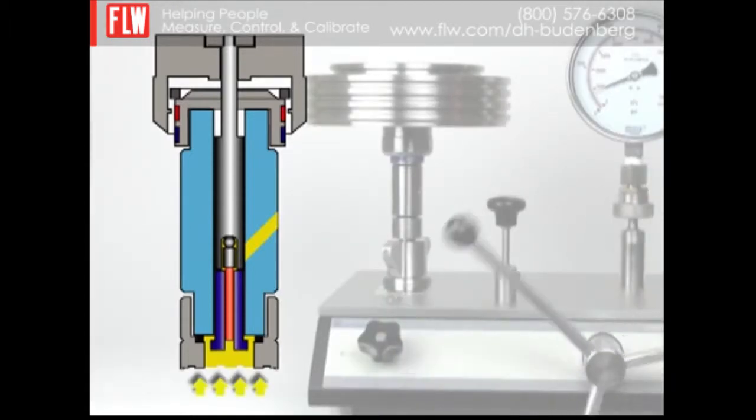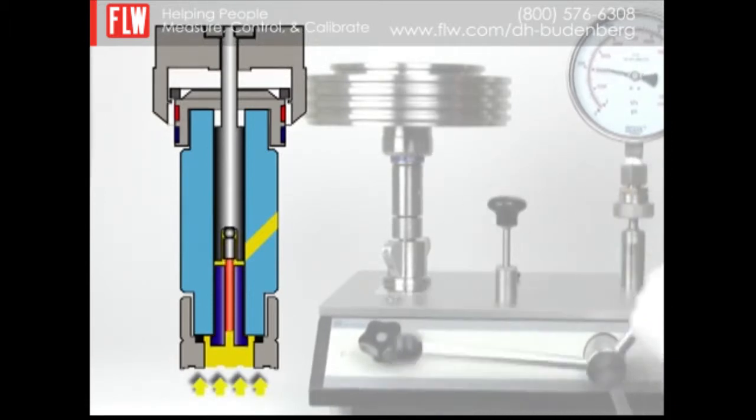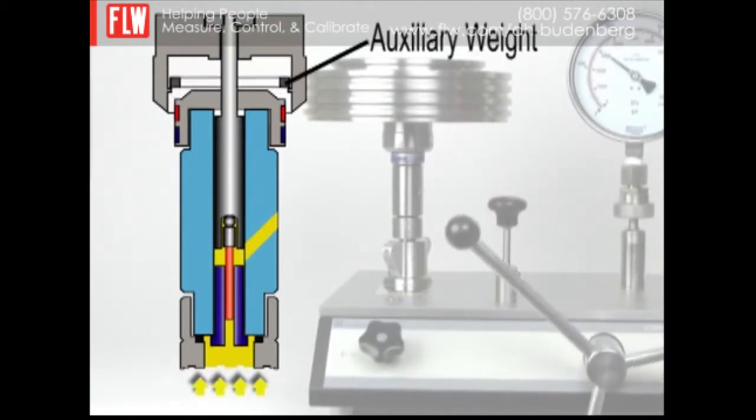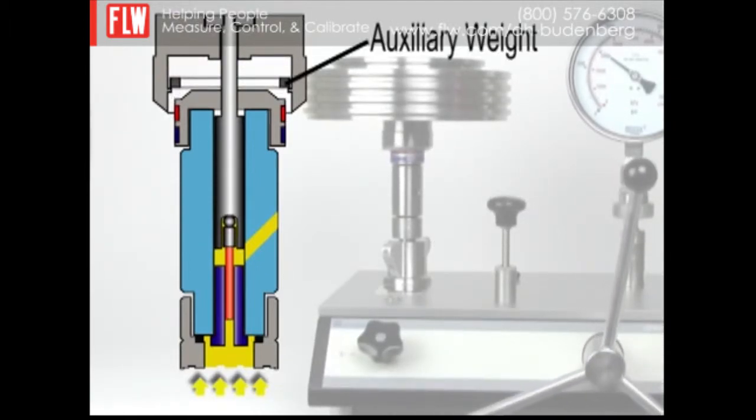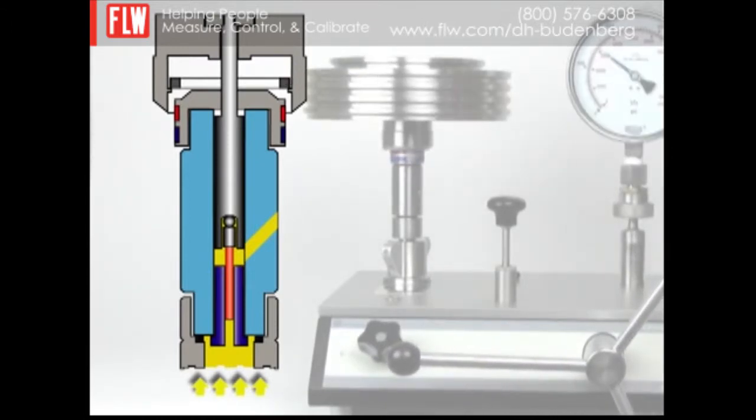To use the high pressure piston, simply increase the fluid pressure. The low pressure piston becomes the cylinder in which the high pressure piston rotates, and the auxiliary weight is lifted to compensate for the weight of the low pressure piston that is no longer a part of the downward force.